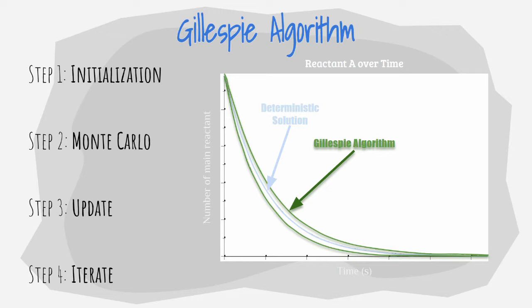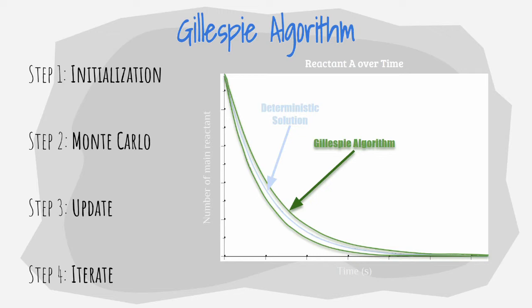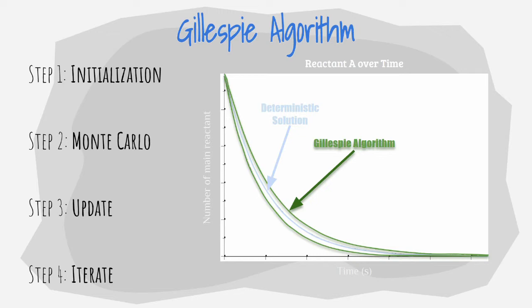As you can see, these different simulations can vary greatly from what a deterministic solution would have given. This is because randomness is inherent in molecular collisions down to the quantum level.